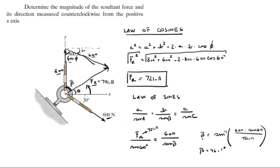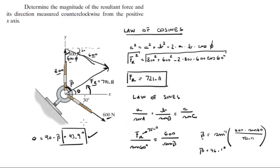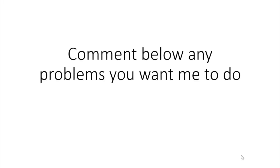However, the angle they are asking for is theta, and you can see that theta equals 90 minus beta, which is 43.9 degrees. That's the final answer for the angle it forms with the x-axis, and 721.11 N is the final answer for the magnitude. Please comment below if you want me to do any problems, and I'll be happy to help. Thank you.